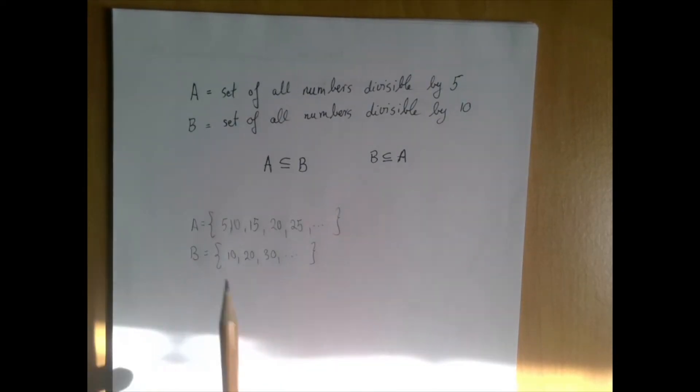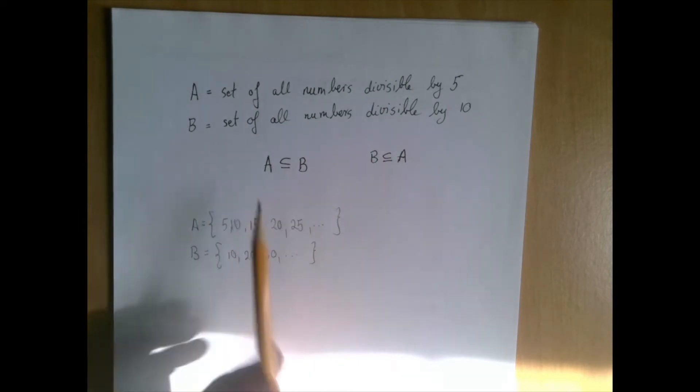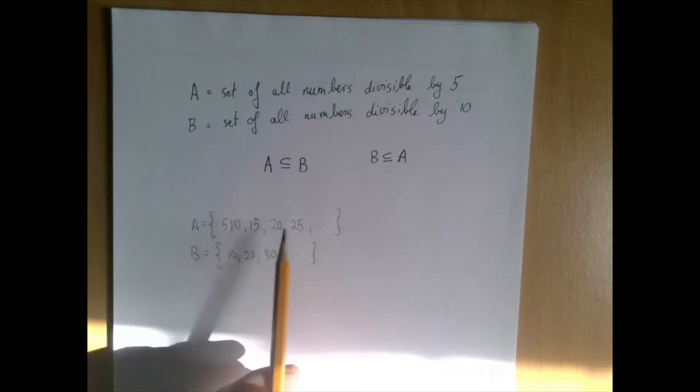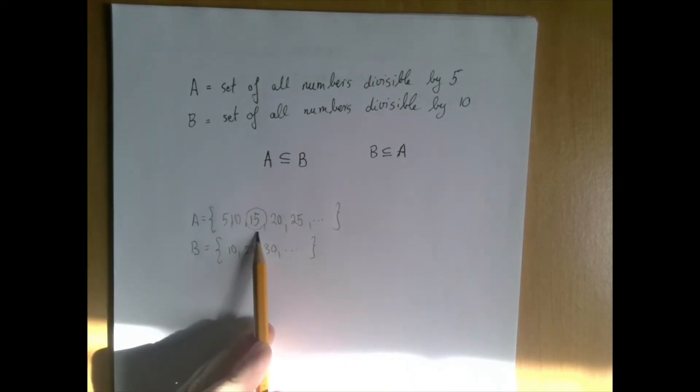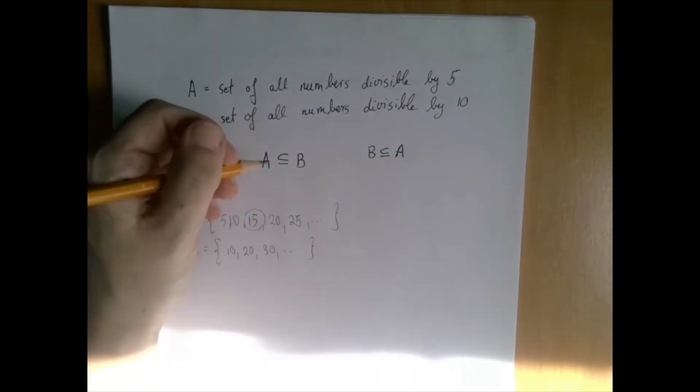The first question is, is it true that A is a subset of B? A is a subset of B if every element of A is in B. Well, that's not true. For example, 15 is an element of A but not in B. So this here is false.